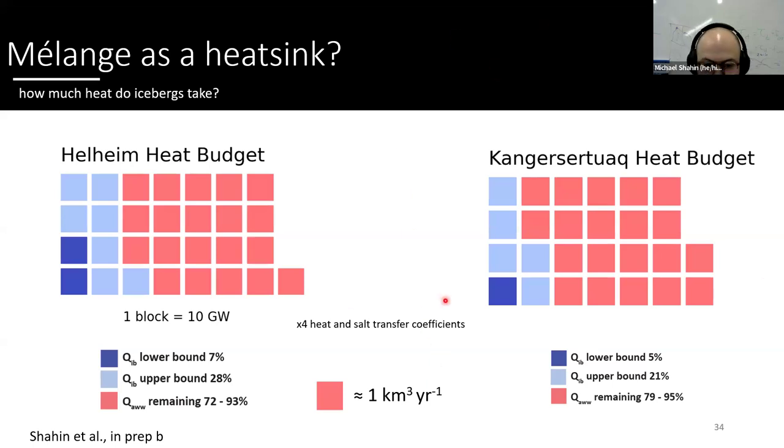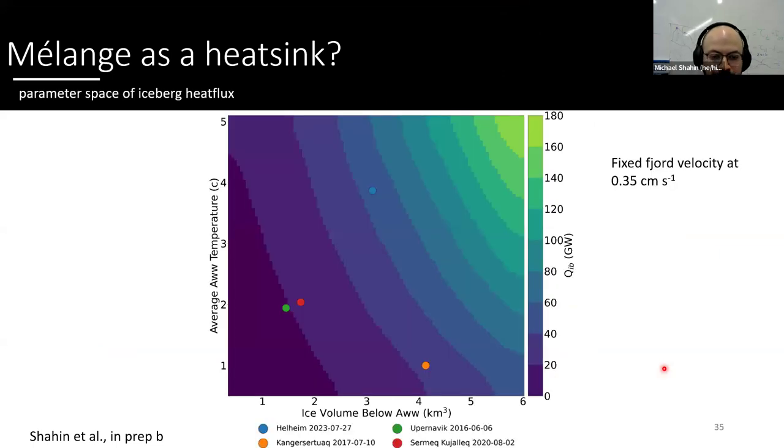And when we use the more realistic transfer coefficients, we get about 28% of the heat in Helheim fjords taken up by these deep icebergs and 21% at the other glacier we study, which is Kangerdlugssuaq fjord. And here we have, because of our methods of using SAM with the iceberg melt model, we can actually view the parameter space of iceberg heat flux. And we don't know all of the red blocks here, but this is pretty much showing us all those blue blocks. And this is for Helheim fjord in blue, Kangerdlugssuaq in orange, red is Sermeq Kujalleq in West Greenland, and then Upernavik fjord in West Greenland as well. And we can see that the ice volume actually varies a lot. And this is using a fixed velocity at 0.35 centimeters per second.